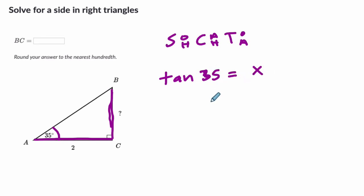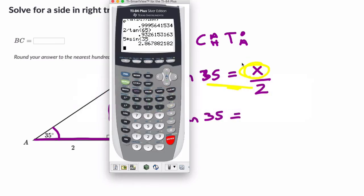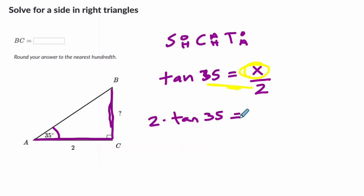And that equals X, this unknown side, opposite over 2. And then X will just be 2 times the tangent of 35. So if you're missing this numerator up here, if X is up here, you can just multiply these two numbers right away. And that will solve it for you. So in this case, if we do 2 times the tangent of 35, 2 times the tan of 35, we get 1.4 to the nearest hundredth.